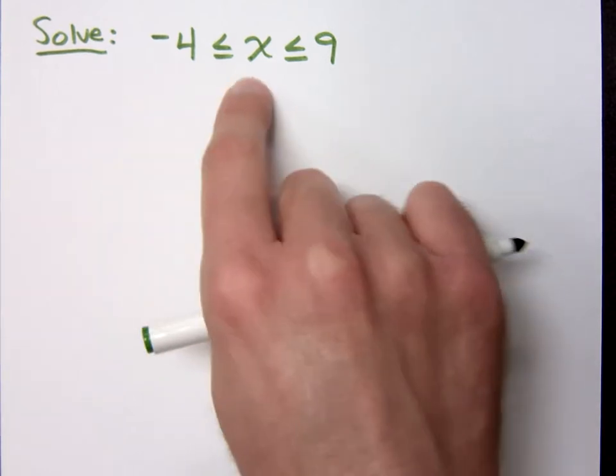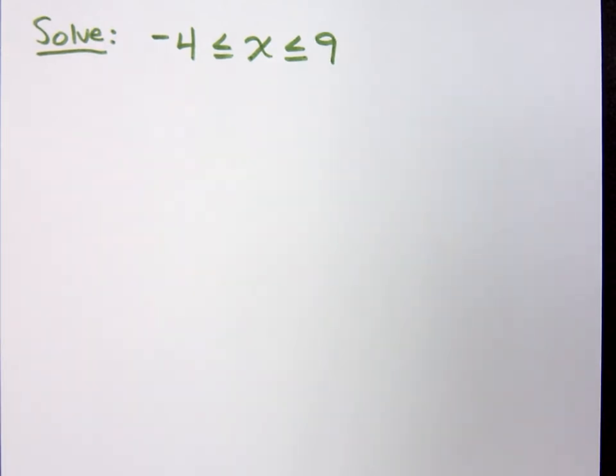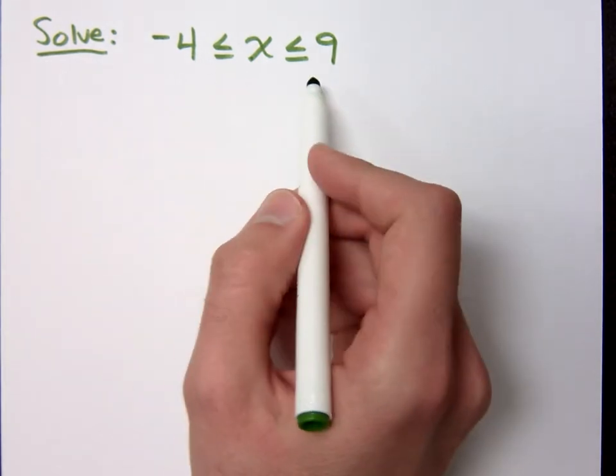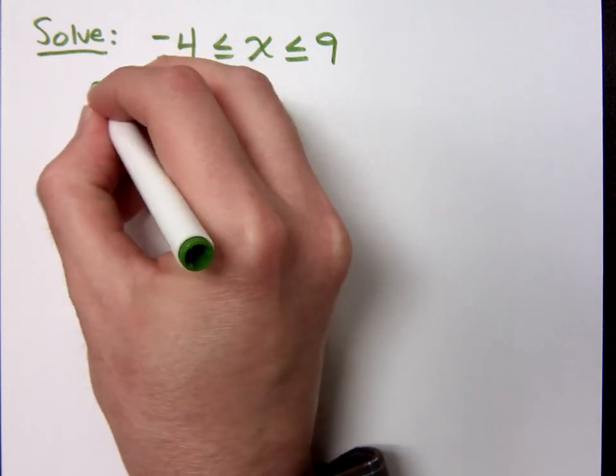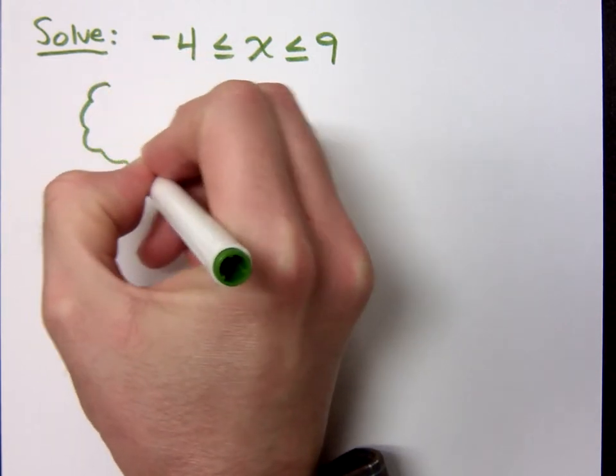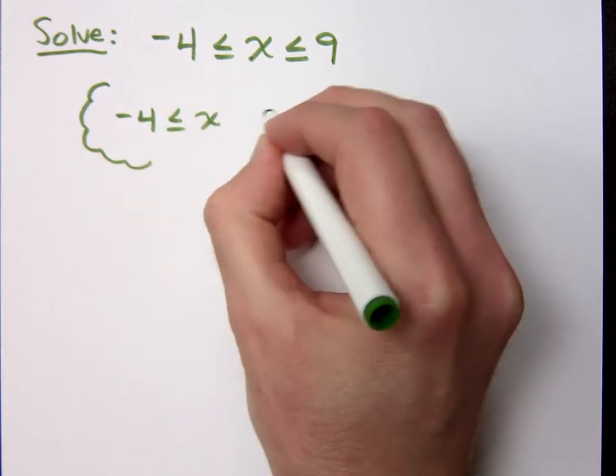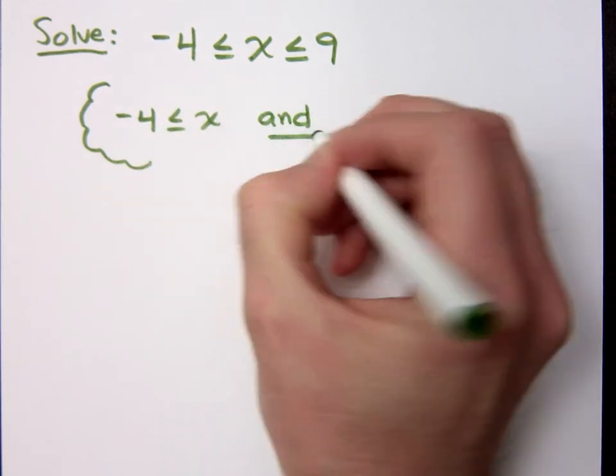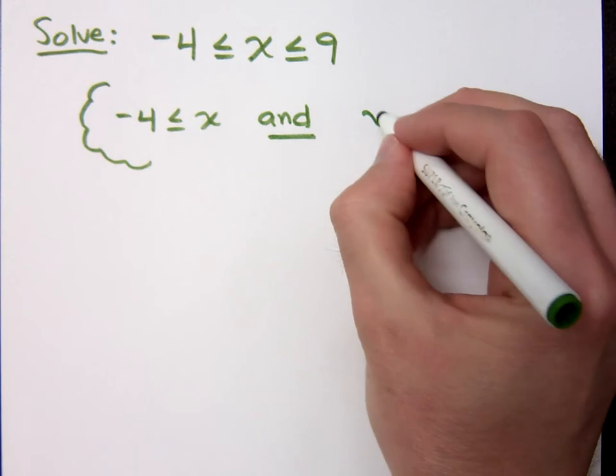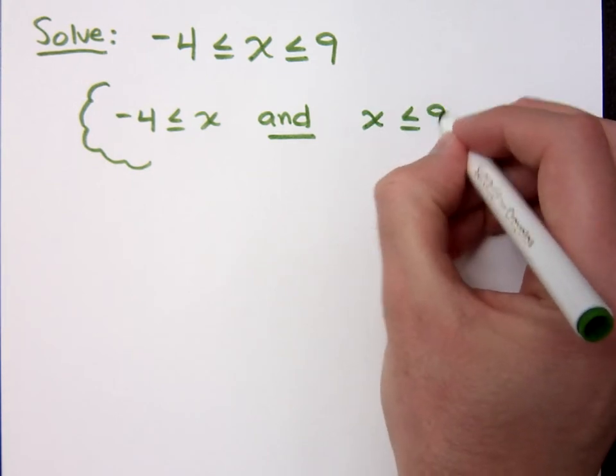Now what you need to understand is what this means when it's a three-part inequality. It means that negative 4 is less than or equal to x while at the same time x is less than or equal to 9.